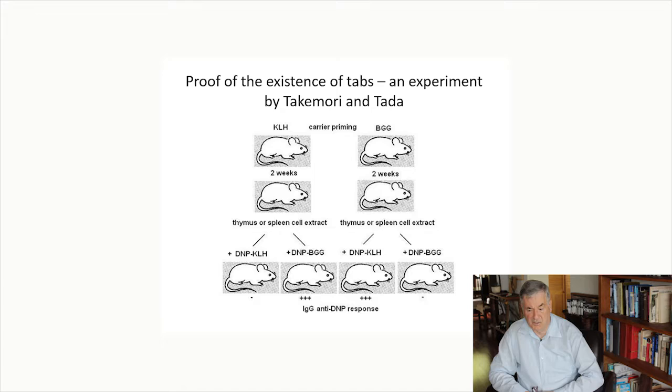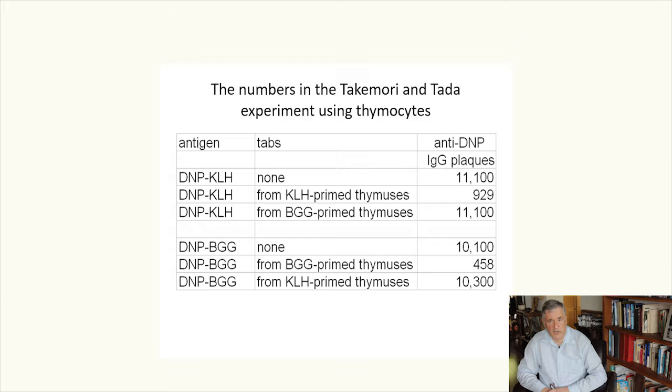DNP and KLH here are simply protein molecules that are used as experimental antigens. These are the numbers in the Takamori and Tata experiment. They're quite dramatic. There's 90% or 95% suppression, depending on whether it's from KLH-primed thymuses or BGG-primed thymuses, relative to control groups in which the specificity of the tabs did not match the specificity of the challenge antigen.